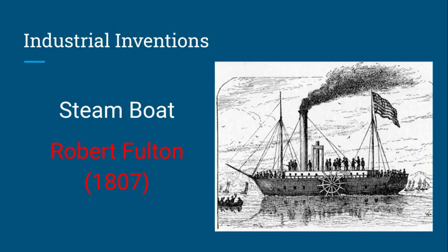Our first industrial invention was invented by Robert Fulton in 1807 — the steamboat. This was a boat that was moving without as much energy from human labor as before. Instead of rowing or paddling, this was a lot easier to transport goods. You could trade more easily and put more things on the steamboat. This was a big invention because it led to human advancement and made life a little bit easier.